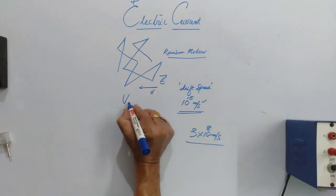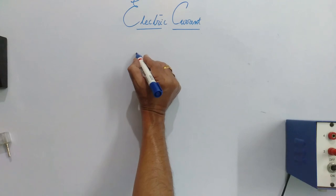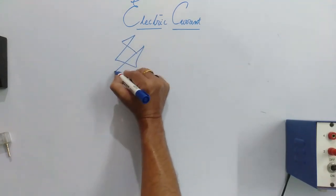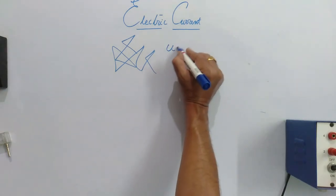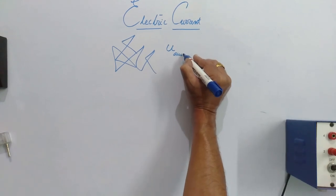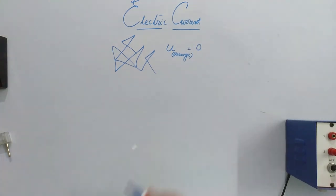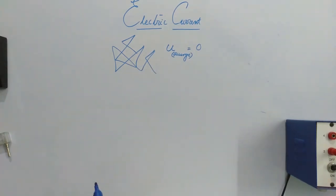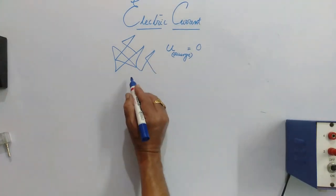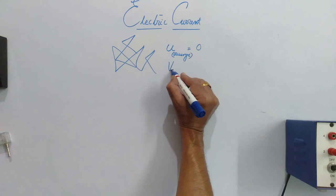Drift speed is written as VD, V suffix D. As we have discussed, the electron before applying the electric field will be in random order. Therefore, initial velocity, initial average velocity, is considered to be zero. Now, after connecting it to an energy device like a cell, then it gets, it means that electron gets a drift velocity.